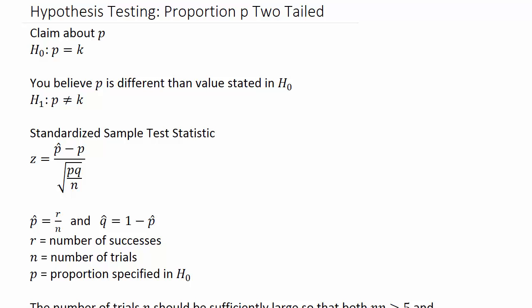Alright, so hypothesis testing for a proportion P — and this will be a two-tail test. For hypothesis testing you have to state your null and alternate hypothesis. The null hypothesis is the claim we make about P, so H-naught would be P equals some number K. The alternate hypothesis says P is different — not less than, not greater than — just different. If you said P is less than, that would be a left-tailed test; P greater than would be a right-tailed test.